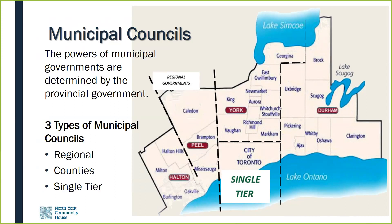Counties exist only in southern Ontario. Local municipalities such as cities, towns, villages, and townships within counties provide the majority of municipal services to their residents. Services provided by county governments are usually limited to arterial roads, health and social services, and county land use planning. Local municipalities in counties raise taxes for their own purposes, as well as for county and school board purposes.